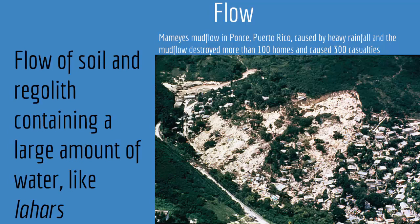Then we have flow — flow of soil and regolith containing a large amount of water, like lahars. An example of a flow landslide would be the famous mudflow in Ponce, Puerto Rico, caused by heavy rains. The mudflow destroyed more than 100 homes and caused 300 casualties.